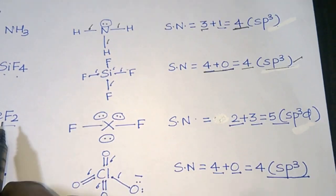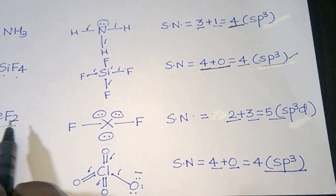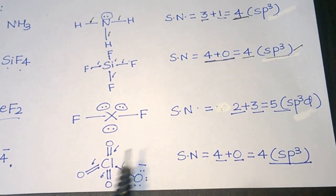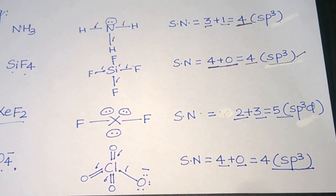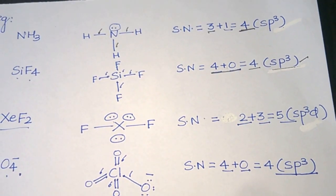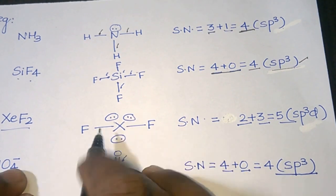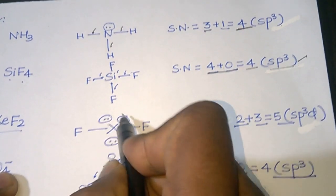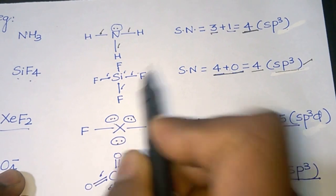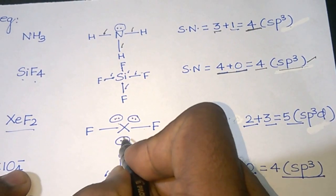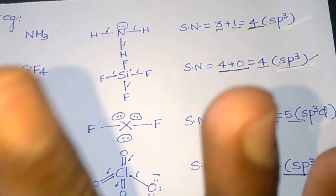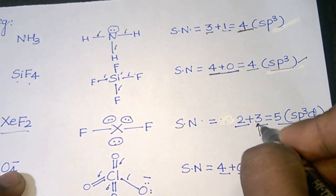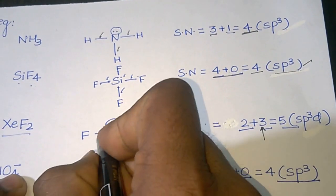Next is XeF2. Xenon has 8 outermost electrons and is forming only 2 bonds. So there are 6 electrons remaining, which means 3 lone pairs of electrons. Therefore there are 3 lone pairs and 2 sigma bonds.